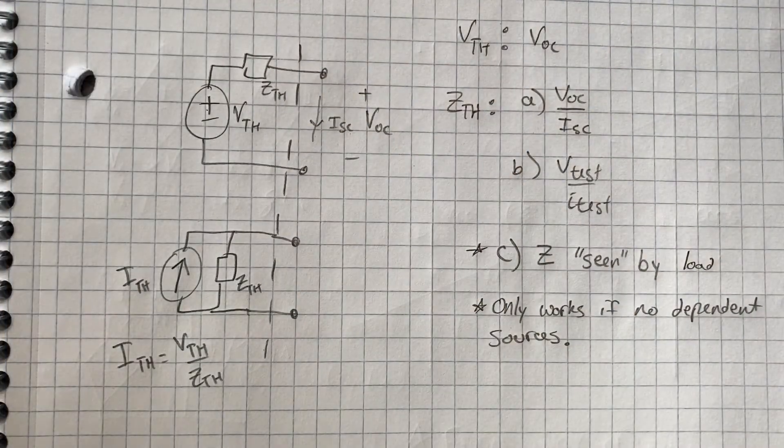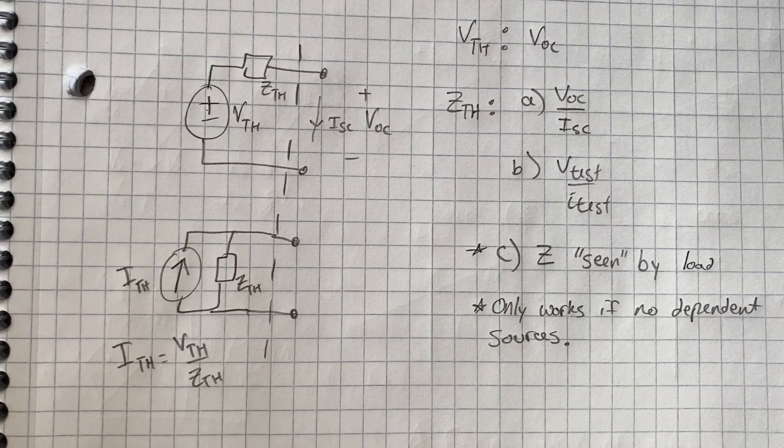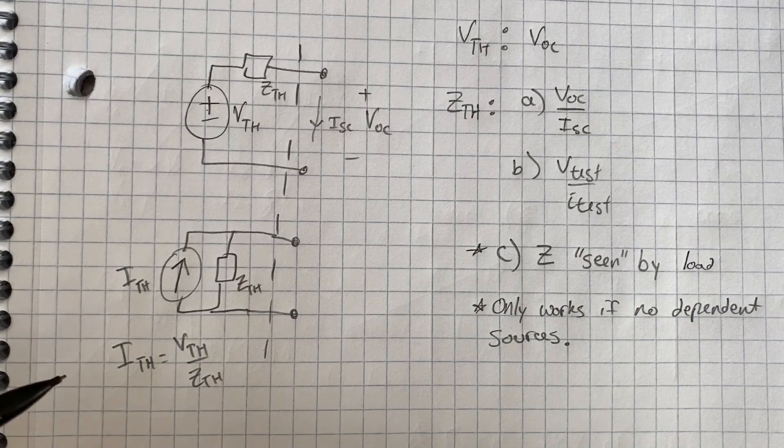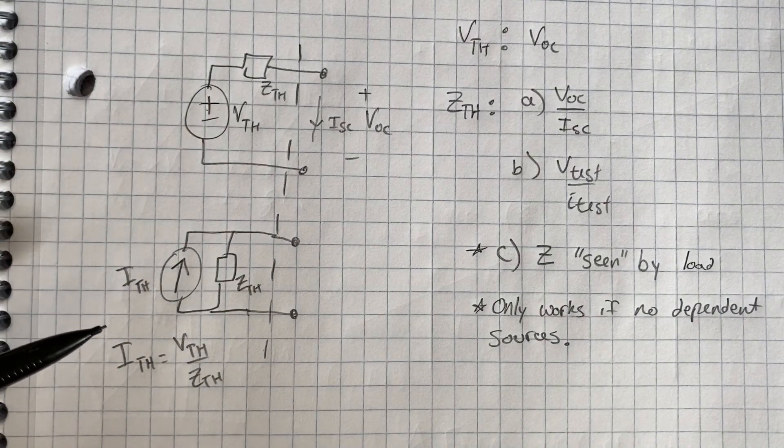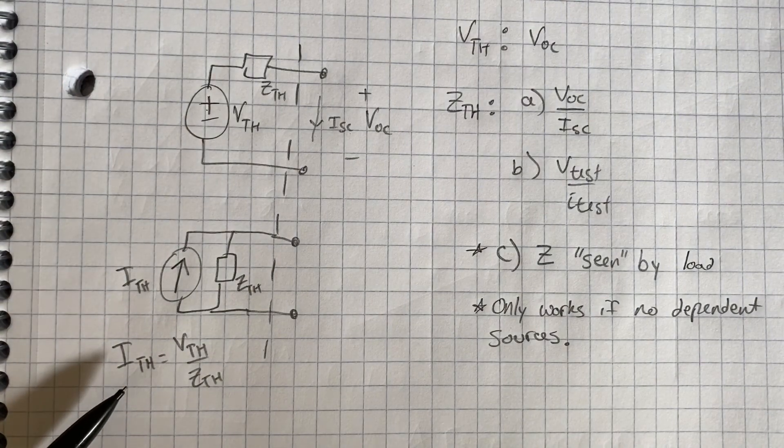In summary, here's a table of how to find V-Thevenin and Z-Thevenin, and in case you want a current source. It's really a Norton transformation, but for simplicity, I'm just going to call this i-Thevenin as well.